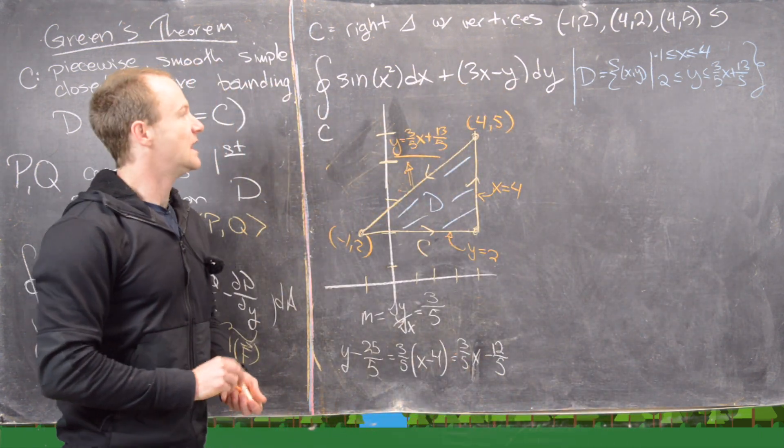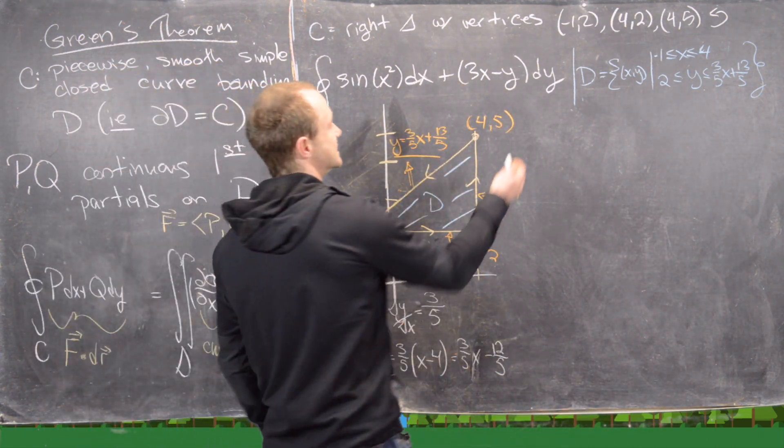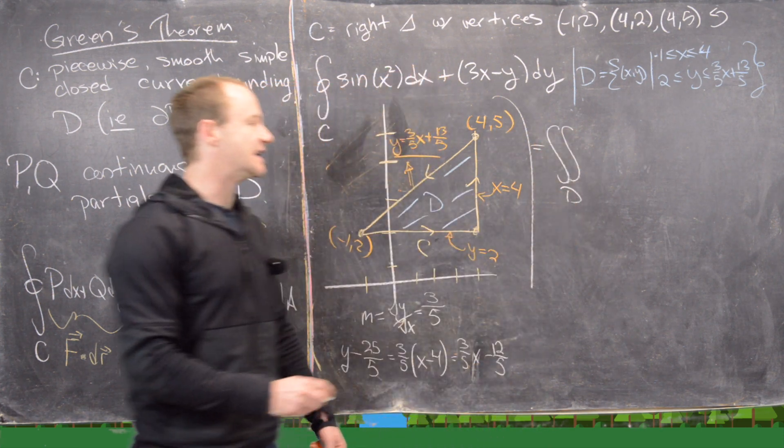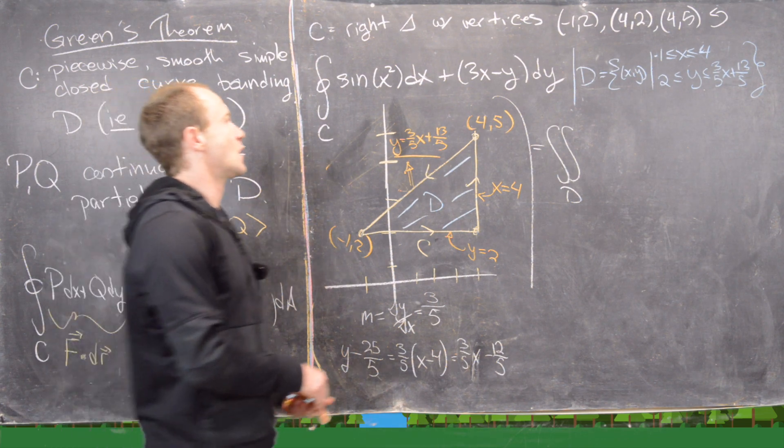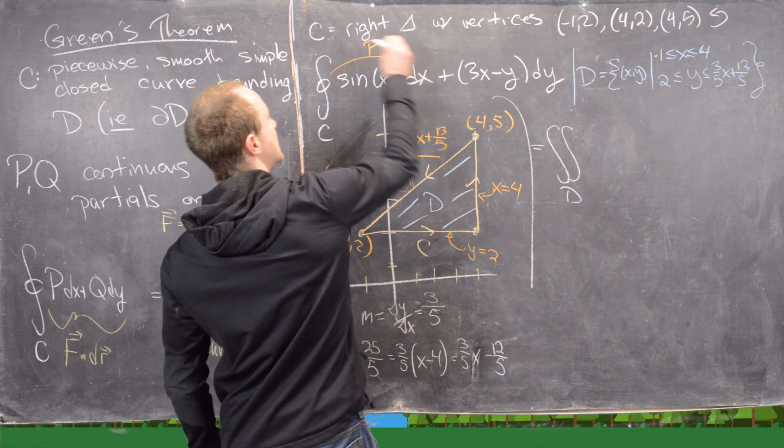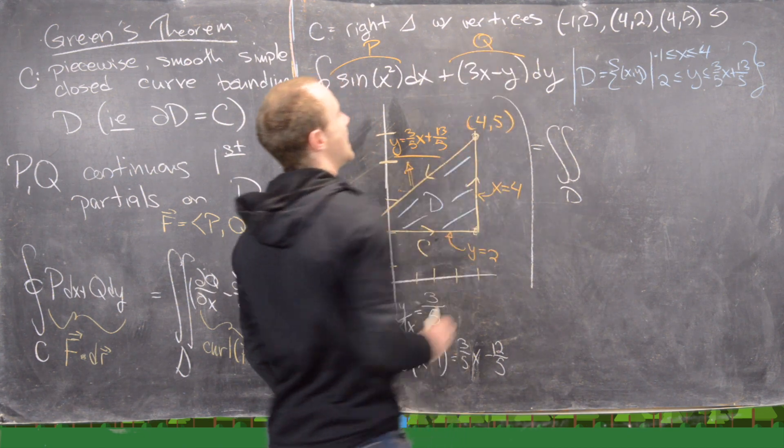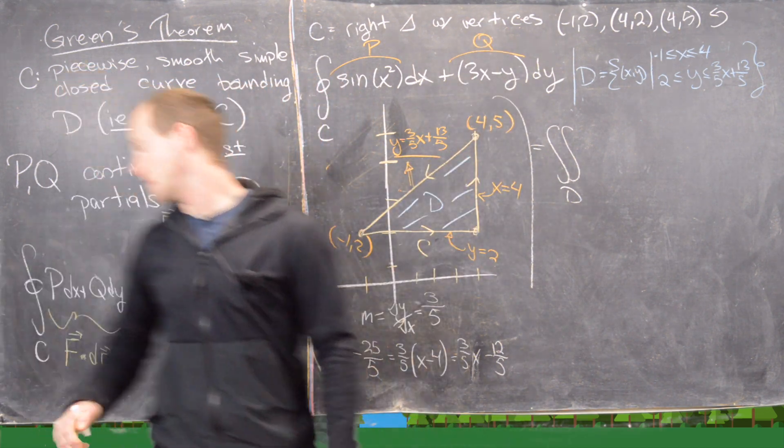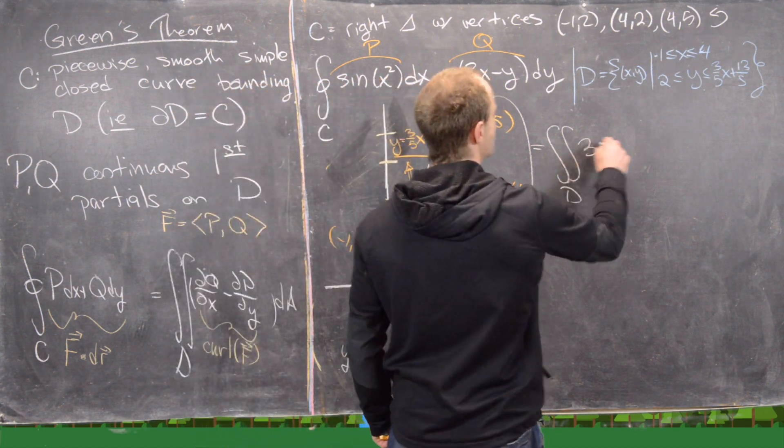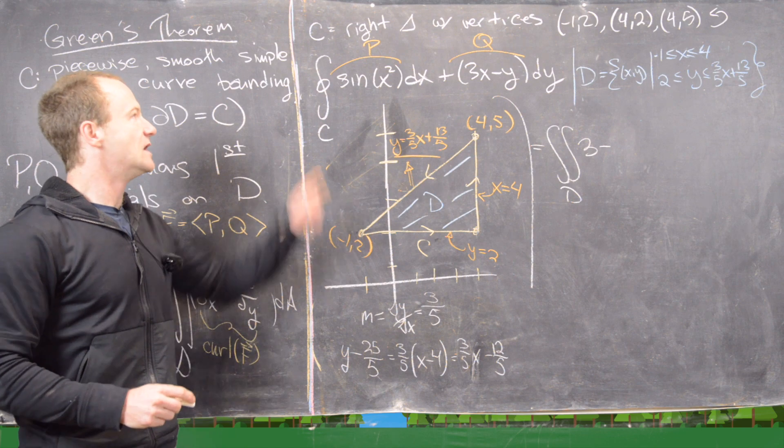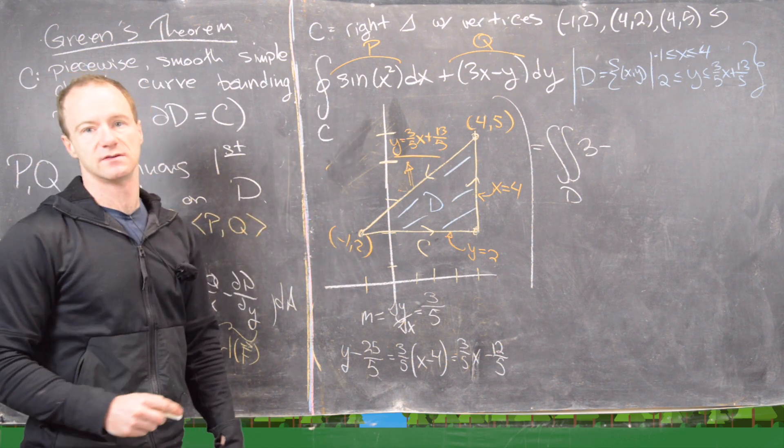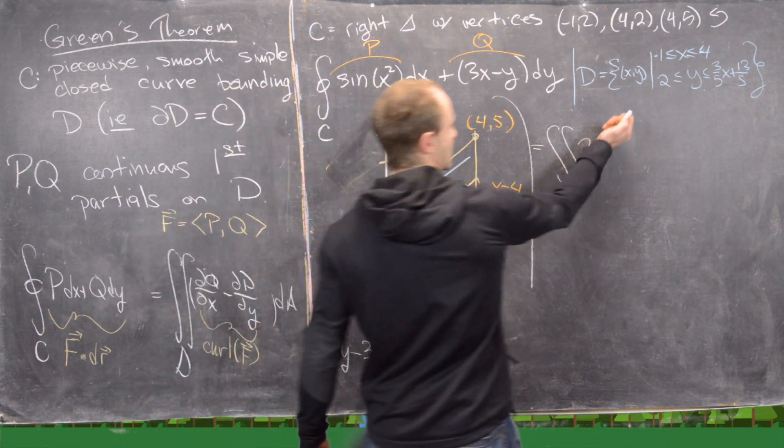Now we can rewrite this line integral as a double integral over D using Green's theorem, where sin(x²) is our function P and 3x - y is our function Q. We need ∂Q/∂x, but that's pretty easy. That's just 3 minus ∂P/∂y. But notice ∂P/∂y is zero because there's no y's in there.